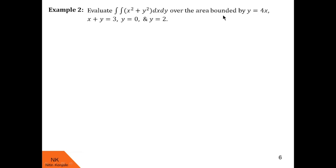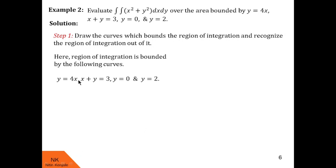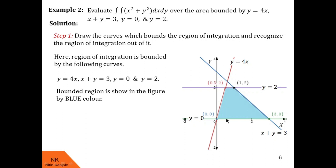Here we are asked to evaluate the double integral of x² + y² dx dy over the area bounded by the curves y = 4x, x + y = 3, y = 0, and y = 2. In step 1, we draw the bounding curves. All of them are straight lines. This is y = 4x, this is x + y = 3, this is y = 0, and this is y = 2. Together they bound this region of integration shaded in blue.